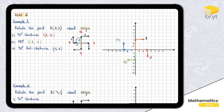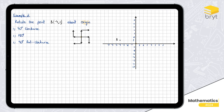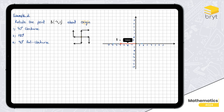Let's solve example two to make this clearer. The point is (-4, 1) and we have three parts again. For the first part, rotate 90 degrees clockwise. For the object I move one unit up and four units to the left. Since the sign doesn't go left, just move horizontally first: four units to the left, then one unit up. So we have four units to the left and one unit up.